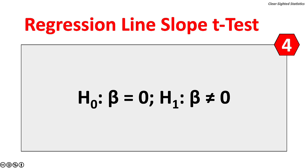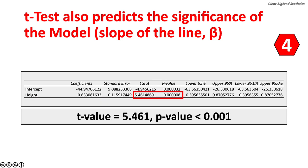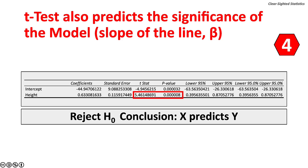Excel also conducts a t-test on whether the slope beta is significant. The null hypothesis is beta equals zero; the alternate hypothesis is beta does not equal zero. Height, the independent variable X, has a coefficient of 0.6331. The test statistic is 5.461, and the p-value is less than 0.001. Conclusion: reject the null hypothesis — the independent variable X predicts the dependent variable Y.